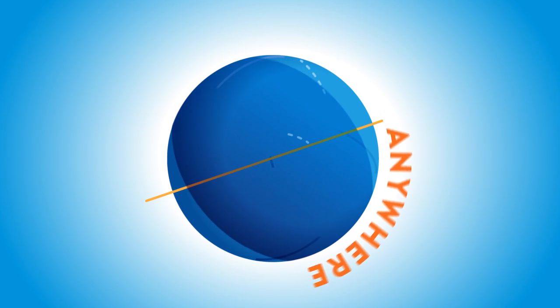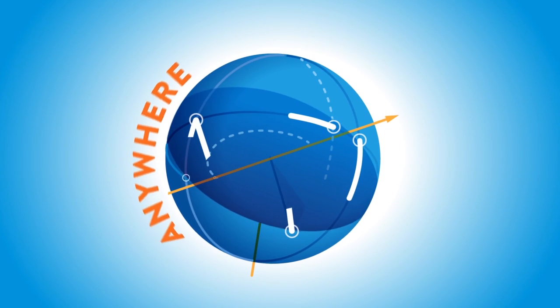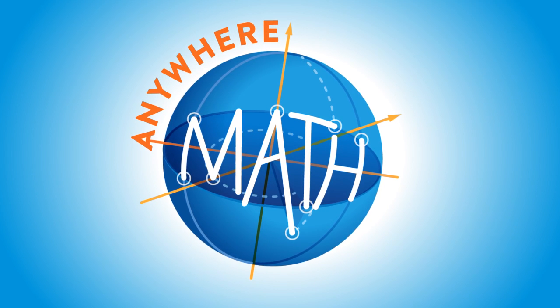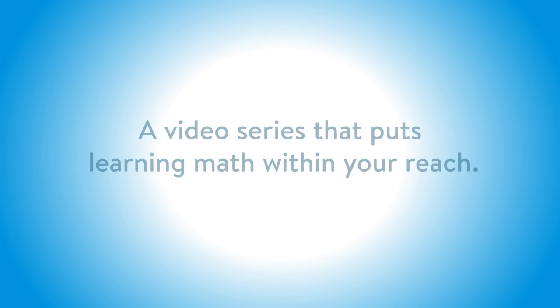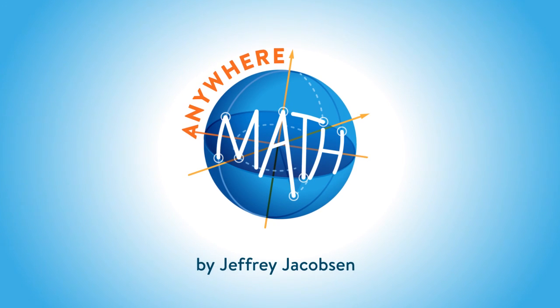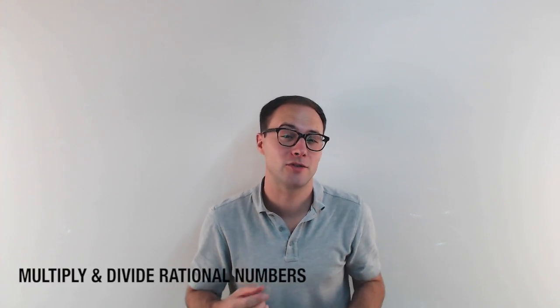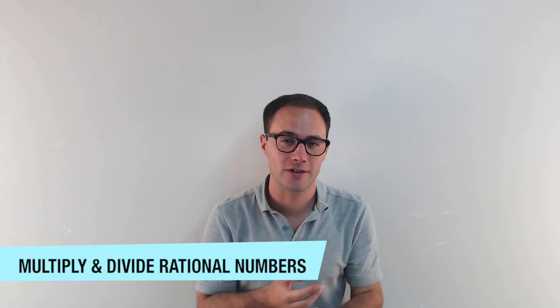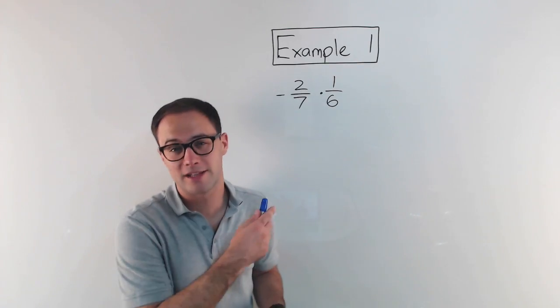We've added and subtracted rational numbers. We've multiplied and divided integers. Now it's time to take the next step and multiply and divide rational numbers. Welcome to Anywhere Math. I'm Jeff Jacobson, and today we're going to learn how to multiply and divide rational numbers. Let's get started right away with example one.